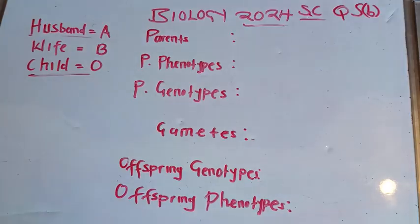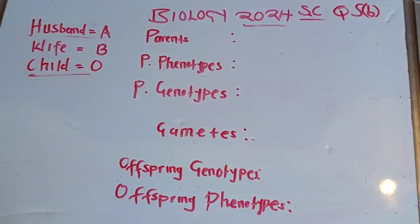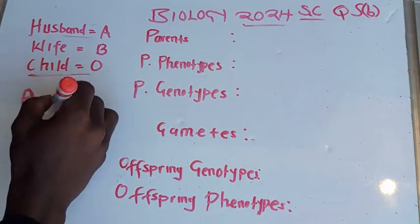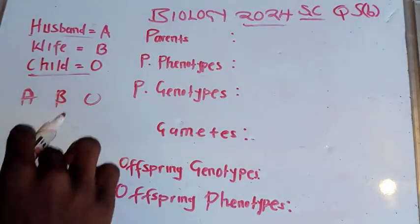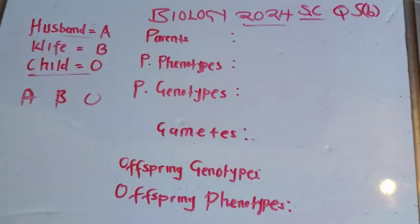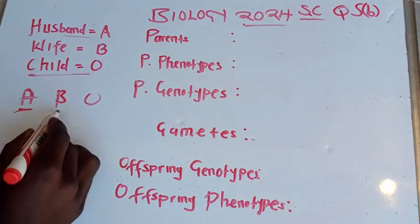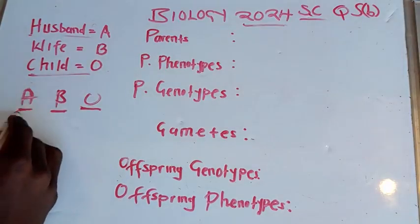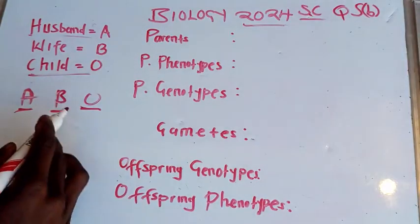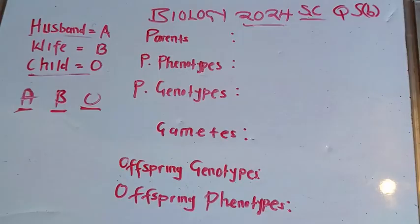The key point you need to bear in mind is that there are three alleles which control blood group inheritance: an allele for blood group A, an allele for blood group B, and an allele for blood group O. Blood group A and blood group B are dominant alleles, whereas the allele for blood group O is a recessive allele.